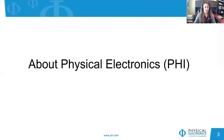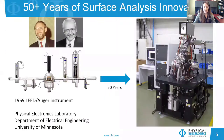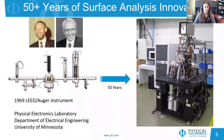A little bit about Physical Electronics. We are a world leader in the manufacturing of surface analytical equipment. We specialize primarily in X-ray photoelectron spectroscopy, Auger Electron Spectroscopy, which we'll focus on in today's presentation, and time-of-flight secondary ion mass spectrometry. The company has been around for over 50 years, starting back in 1969 as a spinoff of the University of Minnesota Electrical Engineering Department. Under the instruction of Professor Bill Peria, Paul Palmberg and Roland Weber developed the first commercially available Auger instrument, which led to the formation of Physical Electronics as we know it today.